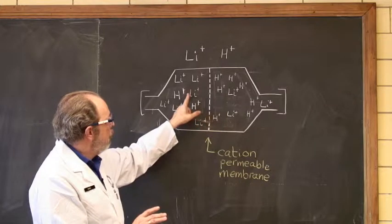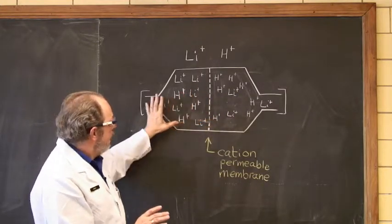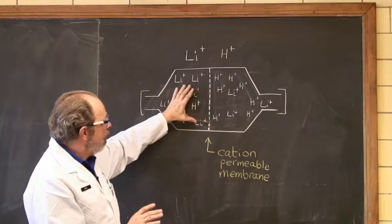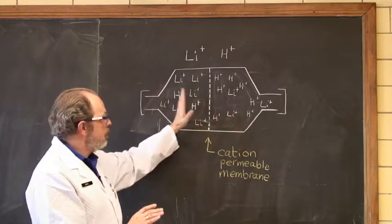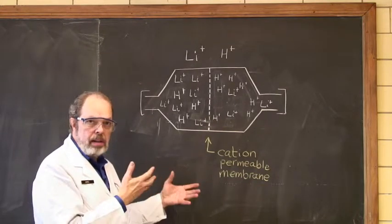Because if we move a lithium over here, you've changed the concentration gradient. But there are other lithiums over here, and you'll have a difference in concentration just in the one cell.